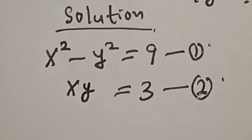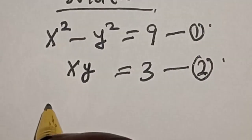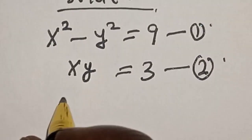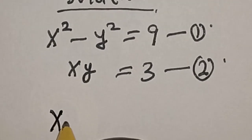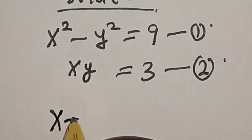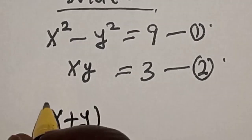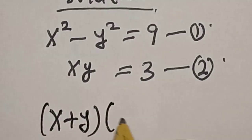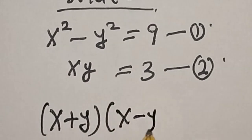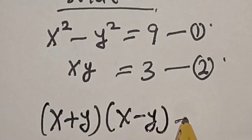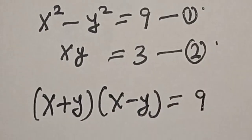From equation 1, this is a difference of two squares. That is, x plus y multiplied by x minus y is equal to 9.